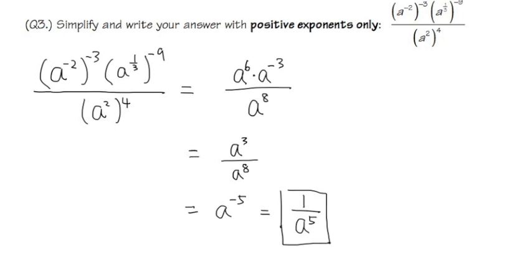But I would like to write down the things that we just did. Let's recap. How did we get the 6? The 6 was because negative 2 times negative 3. So negative 2 times negative 3. That gives us the positive 6. That's the power to the power rule.